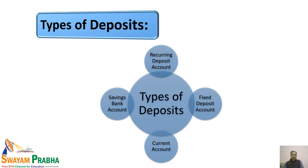Traditionally, there are four types of deposits: saving bank account, current account, recurring deposit account, and fixed deposit account. Within recurring deposits and fixed deposits, various innovative products have emerged for the benefit of depositors, but we are concerned with the basic types.